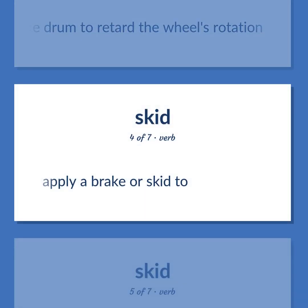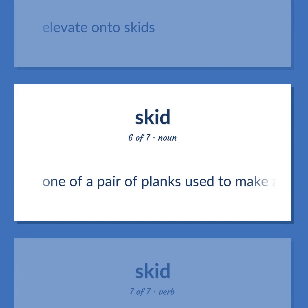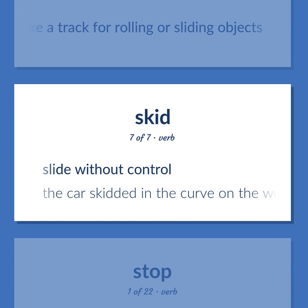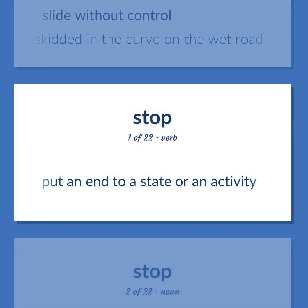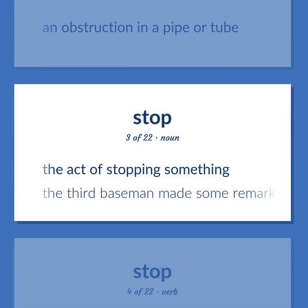Skid: Apply a brake or skid to. Elevate onto skids. One of a pair of planks used to make a track for rolling or sliding objects. Slide without control — the car skidded in the curve on the wet road. Stop: Put an end to a state or an activity. An obstruction in a pipe or tube. The act of stopping something — the third baseman made some remarkable stops.